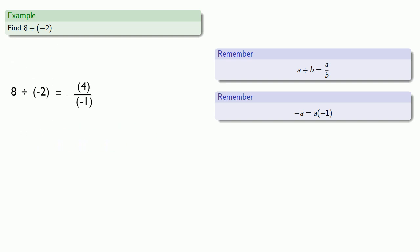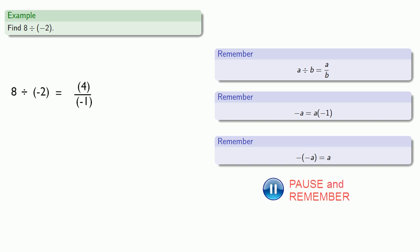Now what can we do about this negative 1? To take care of that, we'll employ something that's a little bit of a trick. It centers around the idea that the additive inverse of the additive inverse of a is a itself. And what that means is that we can write 4 as negative negative 4.